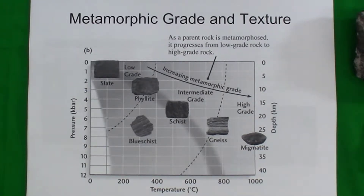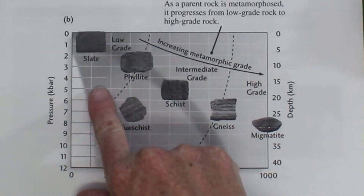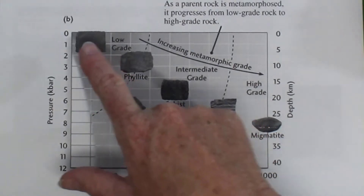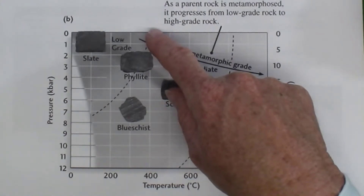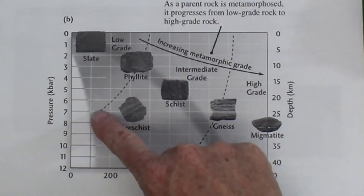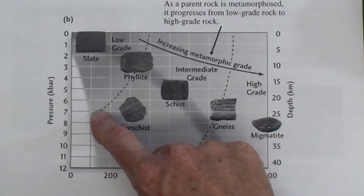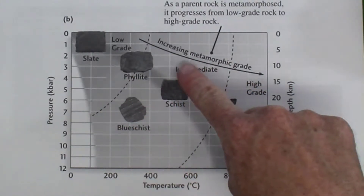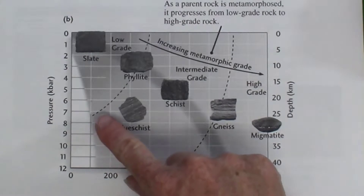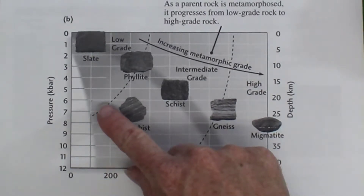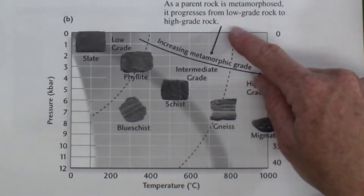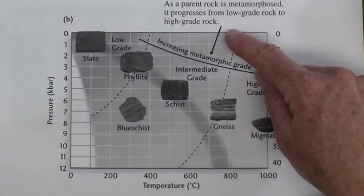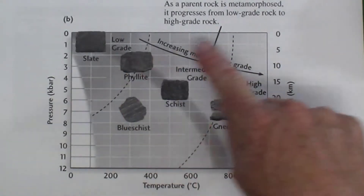You can consider a metamorphic rock as being low grade, intermediate grade, or high grade. Low grade metamorphic conditions exist at temperatures up to about 400 degrees Celsius if the pressure is low, but only up to about 100 degrees Celsius if the pressure is higher. Intermediate grade rocks can form at temperatures as low as about 200 degrees Celsius if the pressure is higher, and the high end of intermediate grade metamorphism can be as high as 800 degrees Celsius, but only under low pressure.